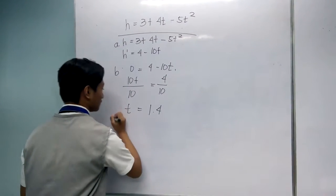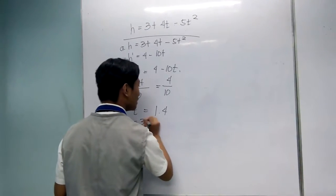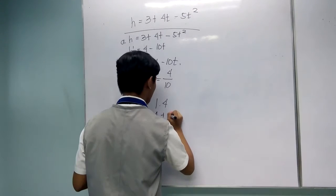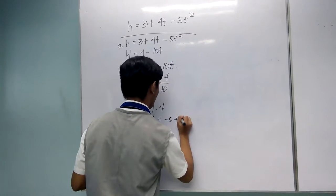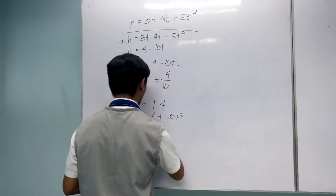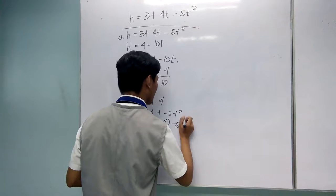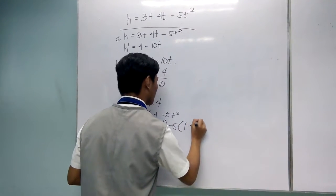The third step is, H equals 3 plus 4t minus 5t squared. So H equals 3 plus 4 times 1.4 minus 5 times 1.4 squared.